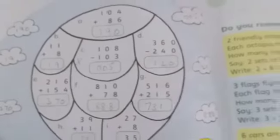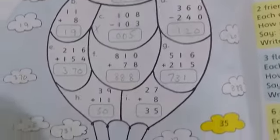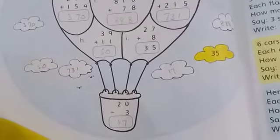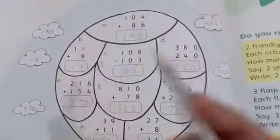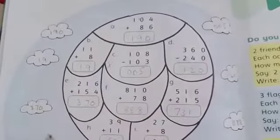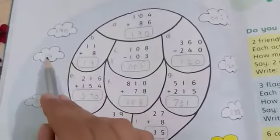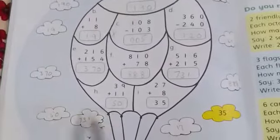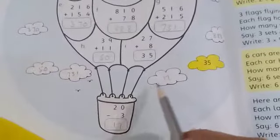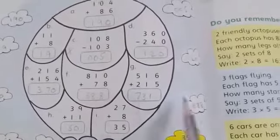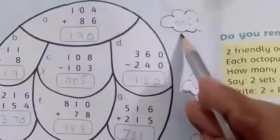Similarly, solve all questions in the hot air balloon, whether addition or subtraction. When you solve them, write each answer in the clouds like this: 190, 19, 370, 50, 731, 17, 888, 120, and 005.